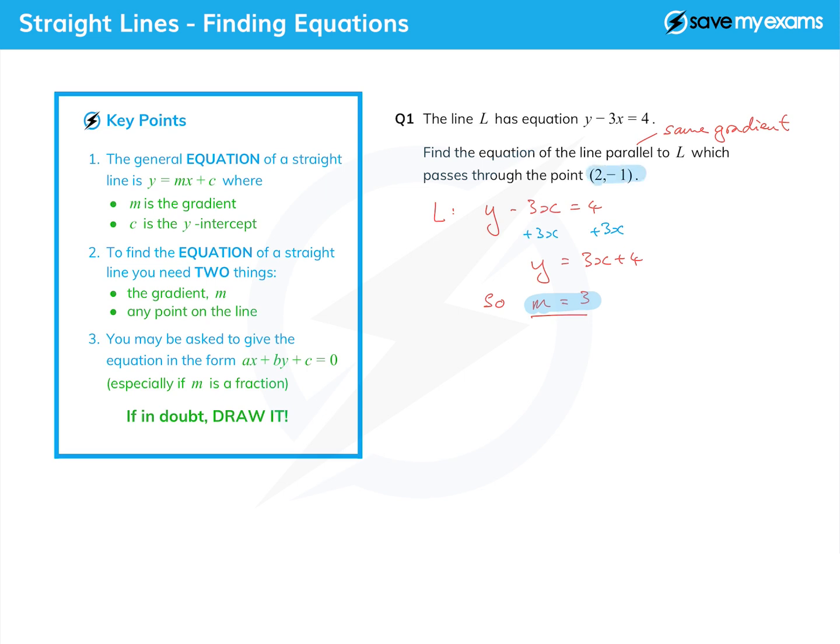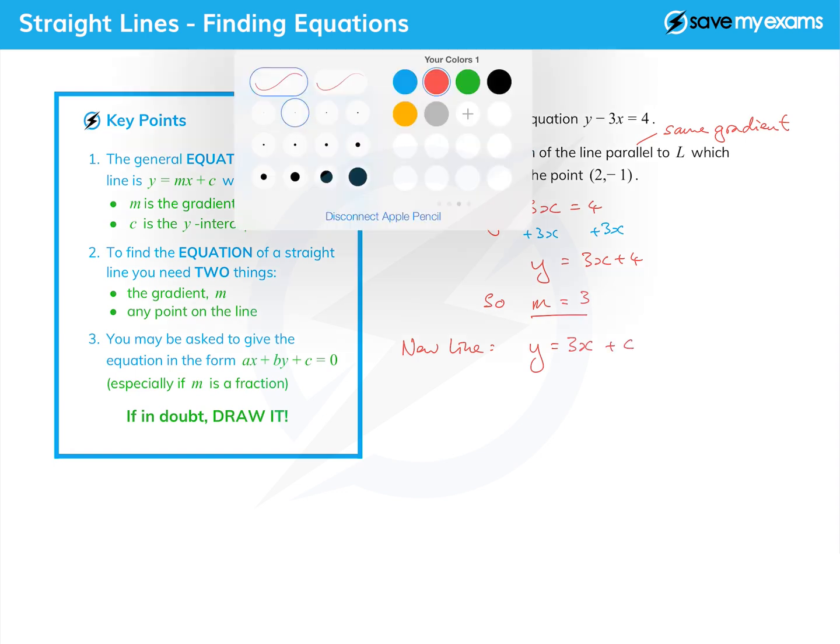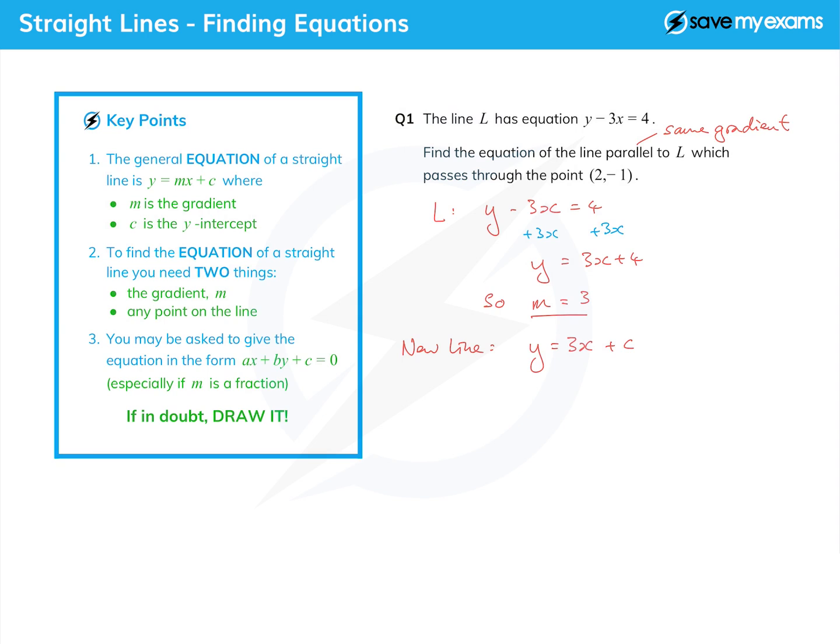Let's go ahead then. Our new line is y equals mx plus c. I know m, that's 3, so it's 3x, but I don't yet know c, so we just write it as plus c. Then I'm going to use the point that I'm given, x equals 2 and y equals minus 1, and we simply stick those in here.